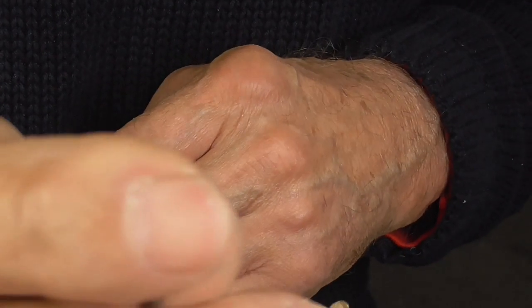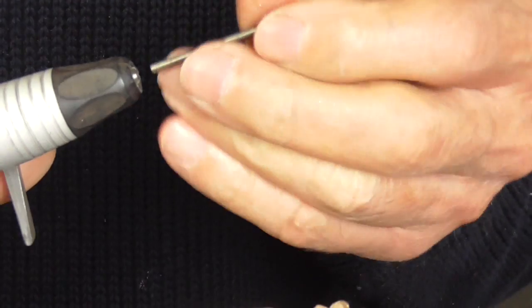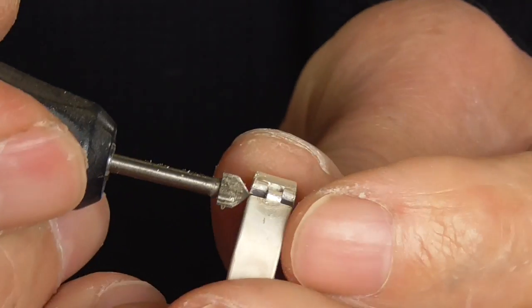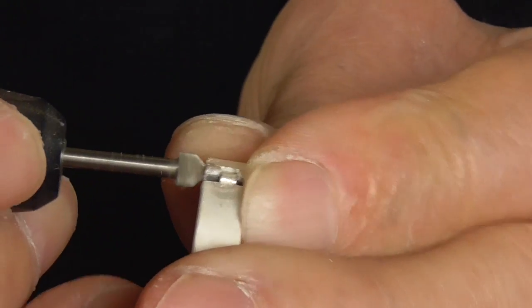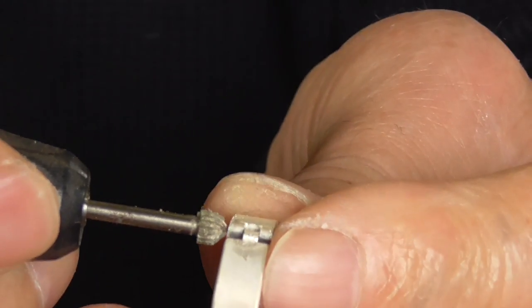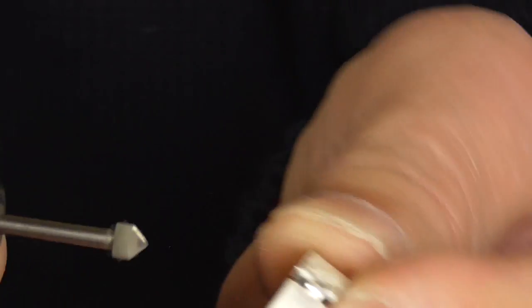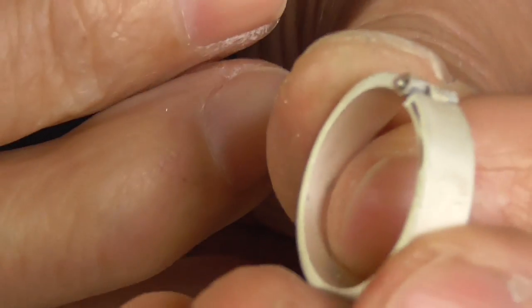Now we're ready to put our hinge pin in, and I'm going to take a setting burr, which is just angled on the end, and I'm going to run it into the hole just a little so that we can countersink the rivet. Like that.